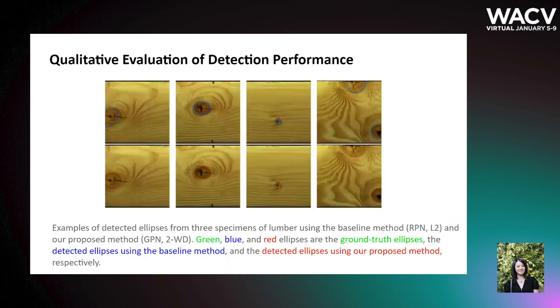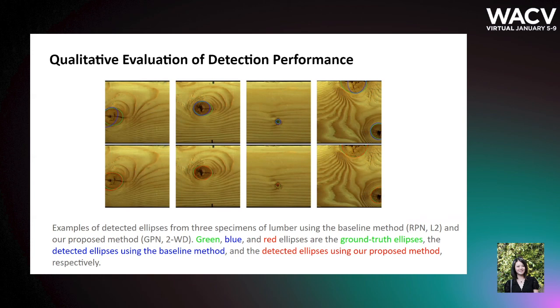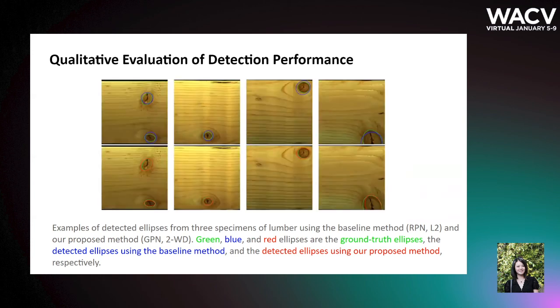These figures are examples of detected ellipses by the baseline model and our proposed model. It can be seen that our method generates more accurate detection results. Here are two more examples.